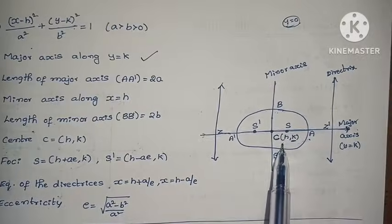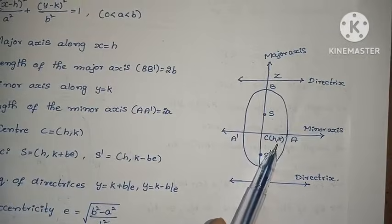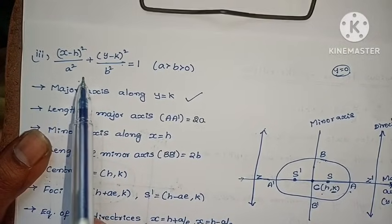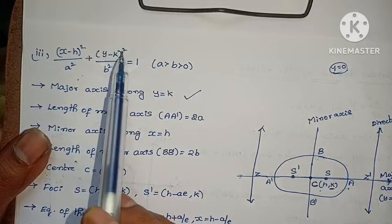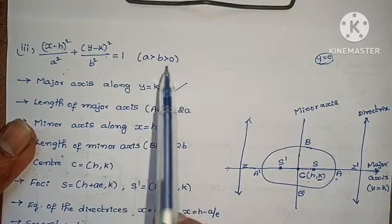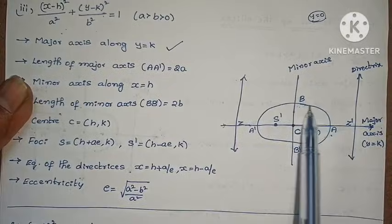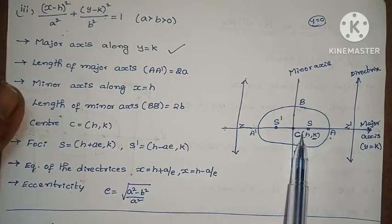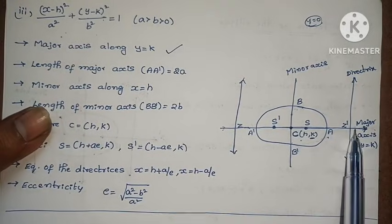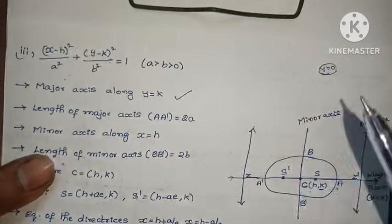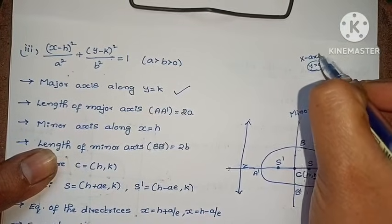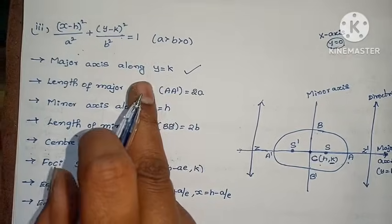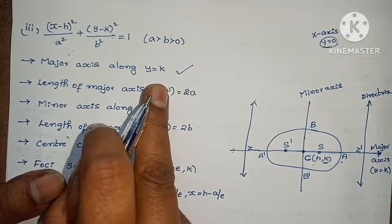When center is (h, k), for a greater than b, the equation of ellipse is: (x−h)² by a² plus (y−k)² by b² equals to 1. The ellipse shape is the same as before for a greater than b greater than 0. The major axis is along x-axis direction, so its equation is y equals to k. Length of major axis AA' equals to 2a. Minor axis equation is x equals to h.